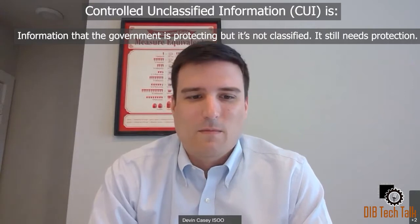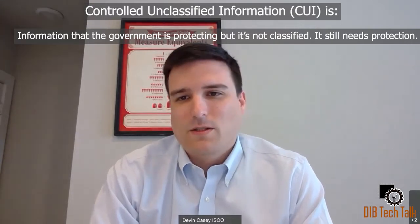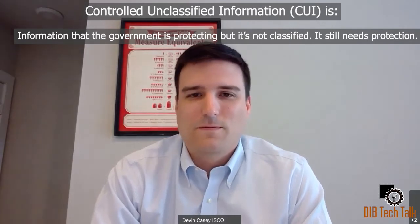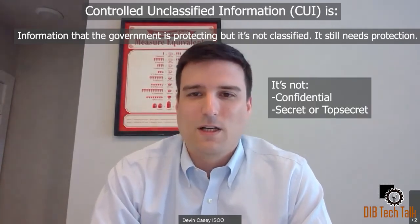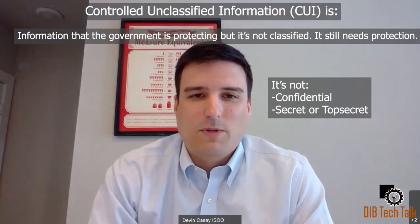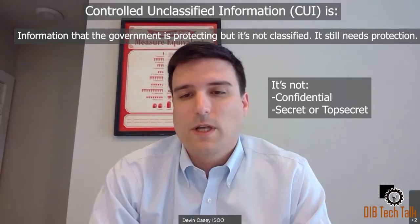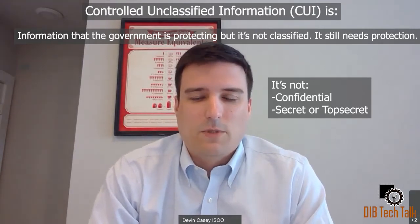In simple terms, CUI, or Controlled Unclassified Information, is the massive umbrella we apply to the things that the government protects — the information that the government is protecting that isn't classified, but still needs protections. It's not rising to the level of national security determination — it's not confidential, secret, or top secret. But it's information that the government is either allowed or required to protect, but not classified.